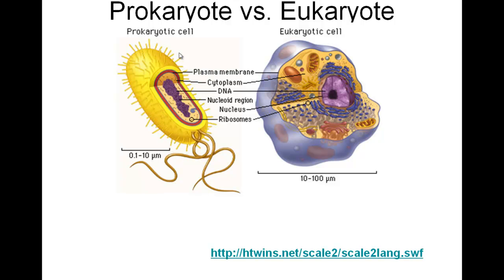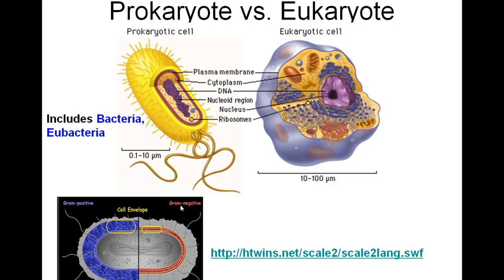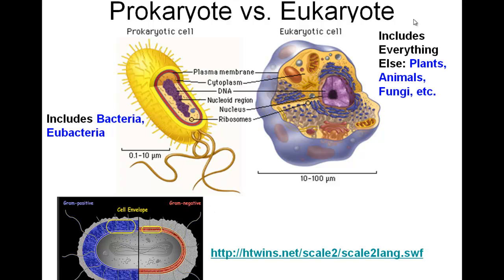The largest prokaryote is actually the smallest of the eukaryotes, and eukaryotes can get 10 times larger or more. Eukaryotic cells have lots of organelles, which we'll cover in the next section of this unit. Prokaryotes include bacteria and eubacteria — true bacteria — the extremophiles as well as what we normally think of as bacteria. They have gram-positive and gram-negative examples based on their cell envelope: a thick envelope absorbs a dye and is gram-positive; one that doesn't hold that dye but holds a different dye is gram-negative. Eukaryotes include plants, animals, and fungi — these are the five kingdoms of all life.